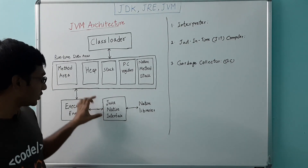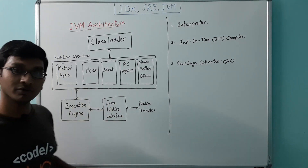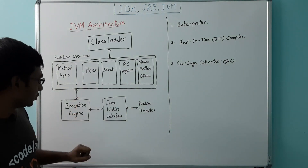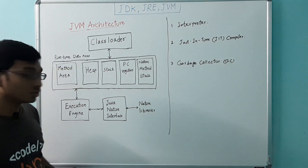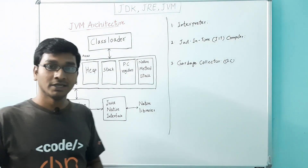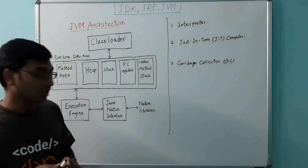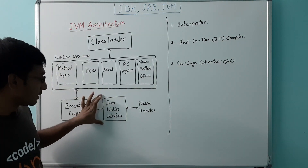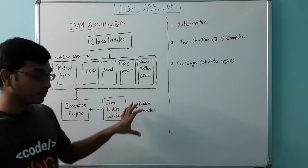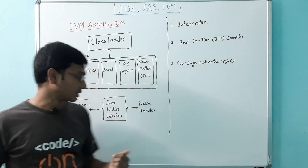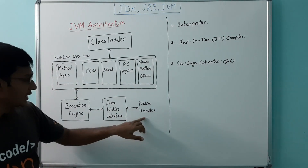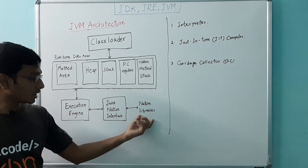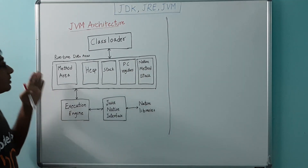Next comes the Java Native Interface, usually represented as JNI. It is an interface between Java code and native libraries like C and C++ libraries. In some cases, Java alone is not sufficient to meet the requirements of your application — for example, if you need to write platform-dependent code. In those cases, JNI acts as an interface between the JVM and the actual native methods, and vice versa. Native libraries contain platform-specific libraries and the implementation of native methods. This is about JVM architecture.